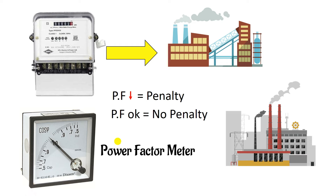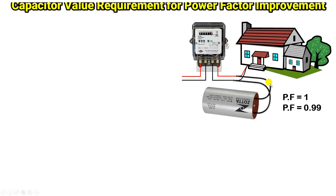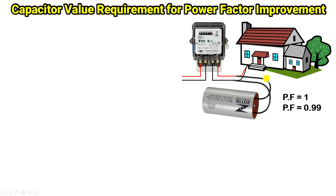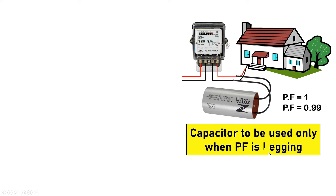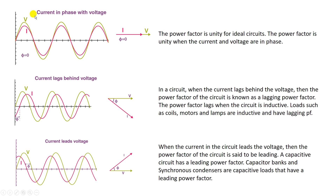The next question is: if power factor is low, what value of capacitor do we need to connect so that power factor becomes 1 or 0.99? Before that, I want to tell you that a capacitor improves lagging power factor only. Power factor is of three types: unity power factor, lagging power factor, and leading power factor.